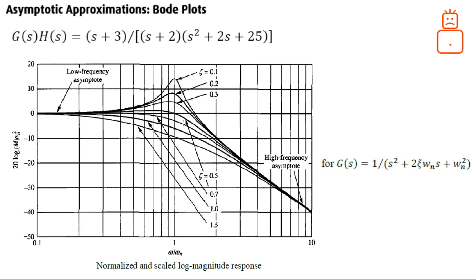The break frequency for complex poles or zeros will be the natural frequency itself. As you can see, when the damping ratio is close to zero there will be a peak in the magnitude portion. This part cannot be drawn using the method learned in previous videos, so you need to do a correction at the break frequency, as we will do in this video.